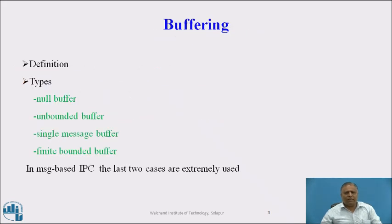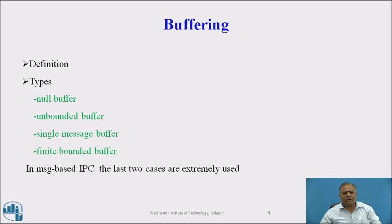Buffering. First we are going to see the definition of buffering. A buffer is a storage device. In sender and receiver, we use some buffering mechanisms. In distributed communication, messages are transferred from one process to another. The messages are copied from the sender's address space to the receiver's address space. Sometimes, messages are stored in temporary storage called a buffer during transmission to the receiver end. The following types of buffering mechanisms are used in distributed systems: Null Buffer, Unbounded Buffer, Single Message Buffer, and Finite Bounded Buffer. In message-based inter-process communication (IPC), the last two cases are extremely used.